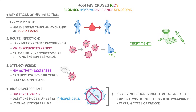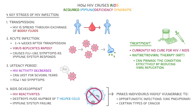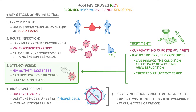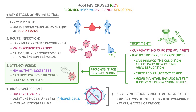Regarding treatment, while unfortunately there's currently no cure for HIV or AIDS, antiretroviral therapy, or ART, can manage the condition by reducing viral replication. It's usually targeted at the latency period and prolongs it for several years. This helps to maintain the immune system and prevent the progression to AIDS, improving the quality of life for people living with HIV.